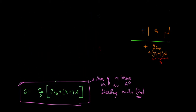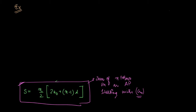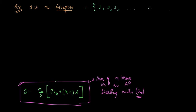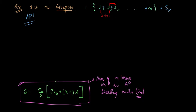This formula appears extensively in mathematics and physics. As an example, let's find the sum of the first n integers: 1, 2, 3, … , n. First, we ask: is this an AP? We check by looking at differences between consecutive terms — 2 minus 1 is 1, and 3 minus 2 is 1 — so the common difference d equals 1.